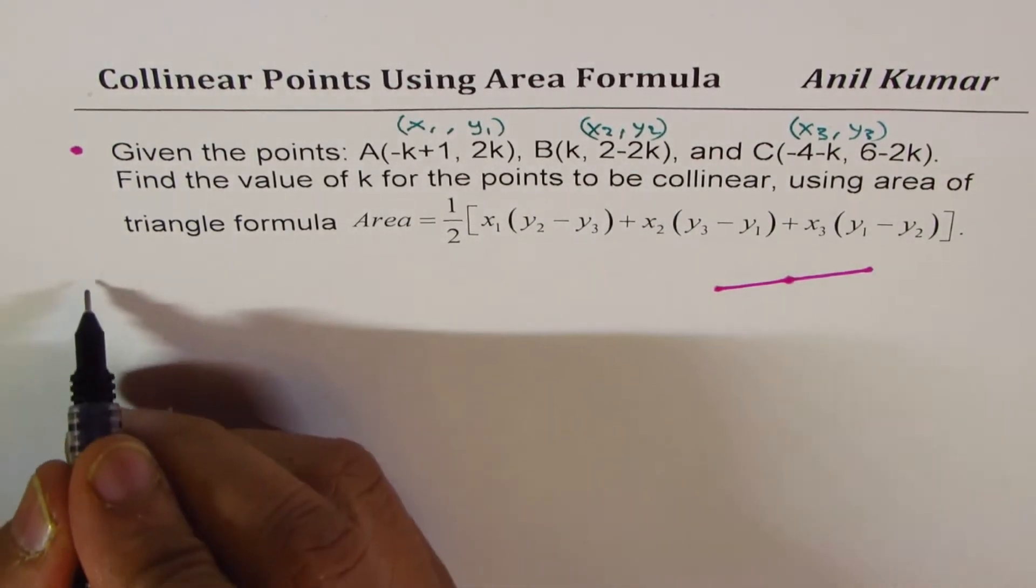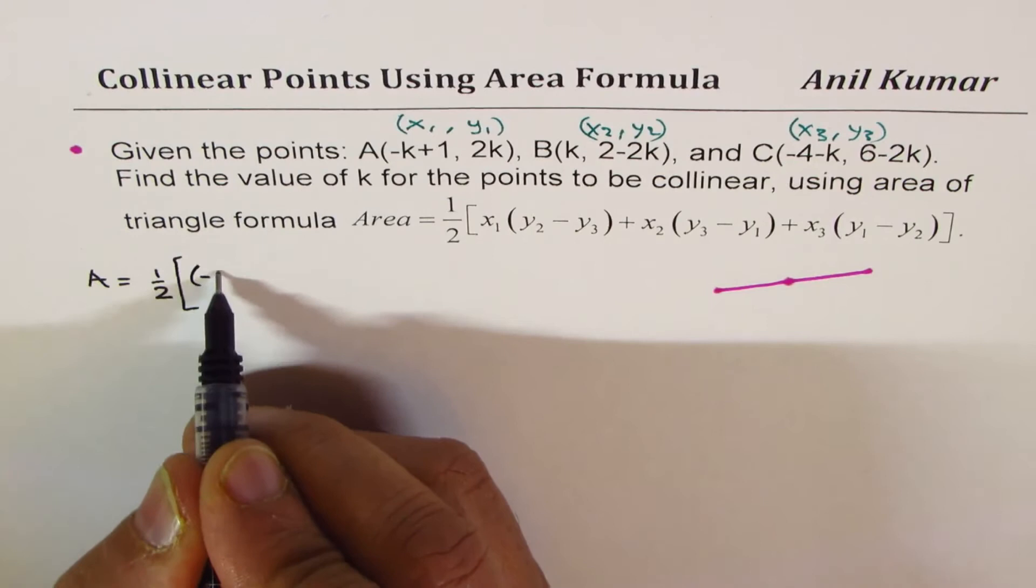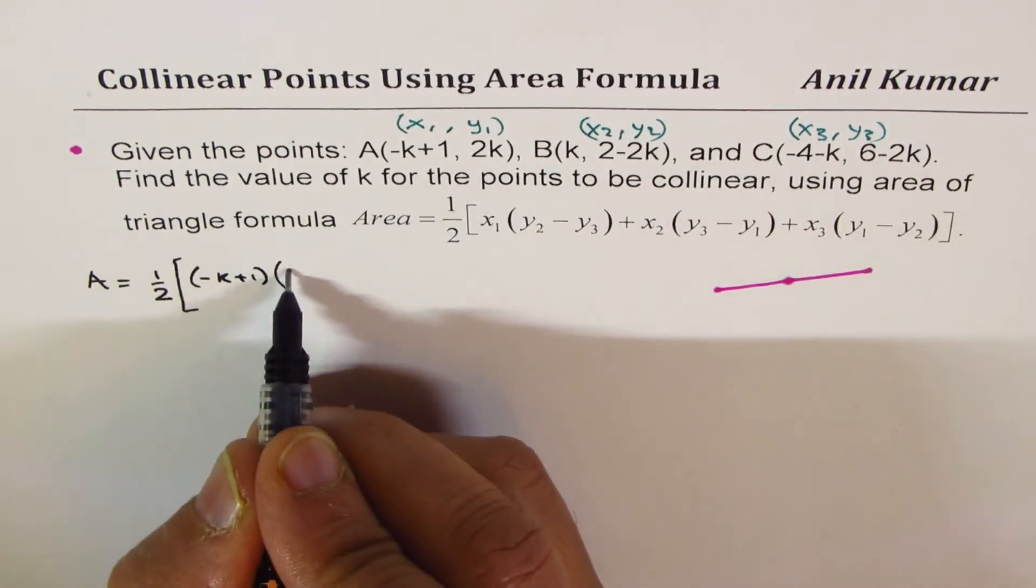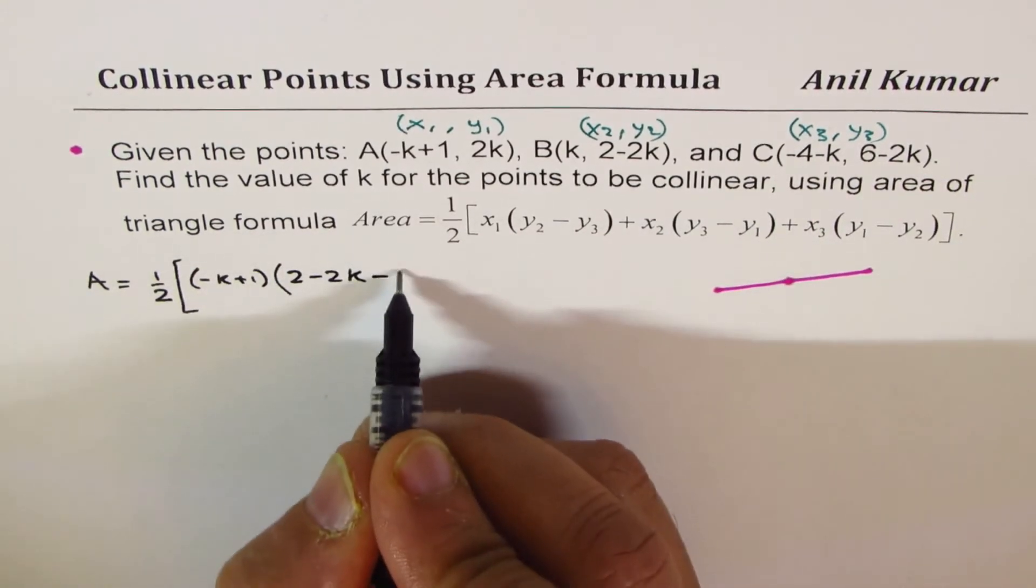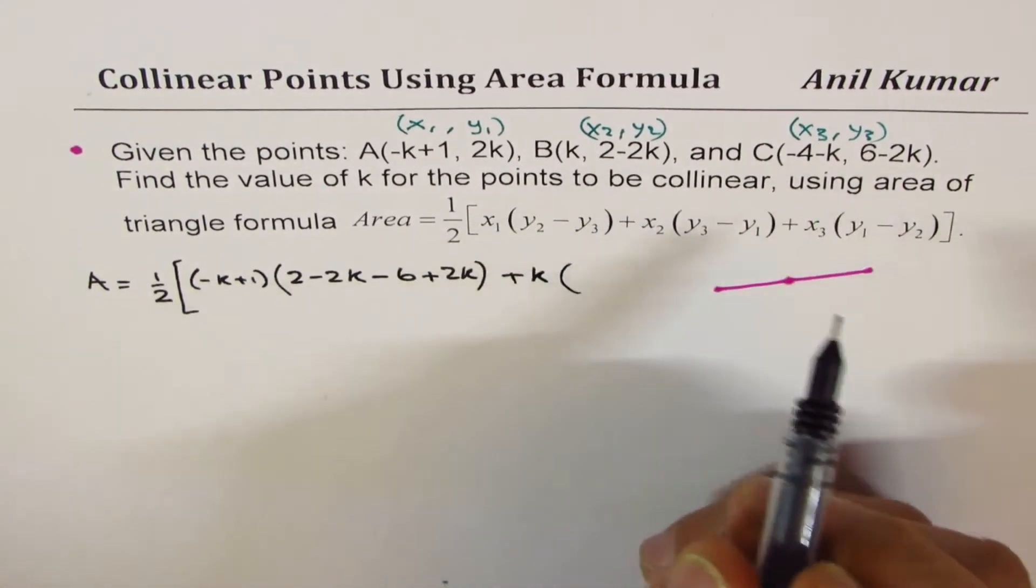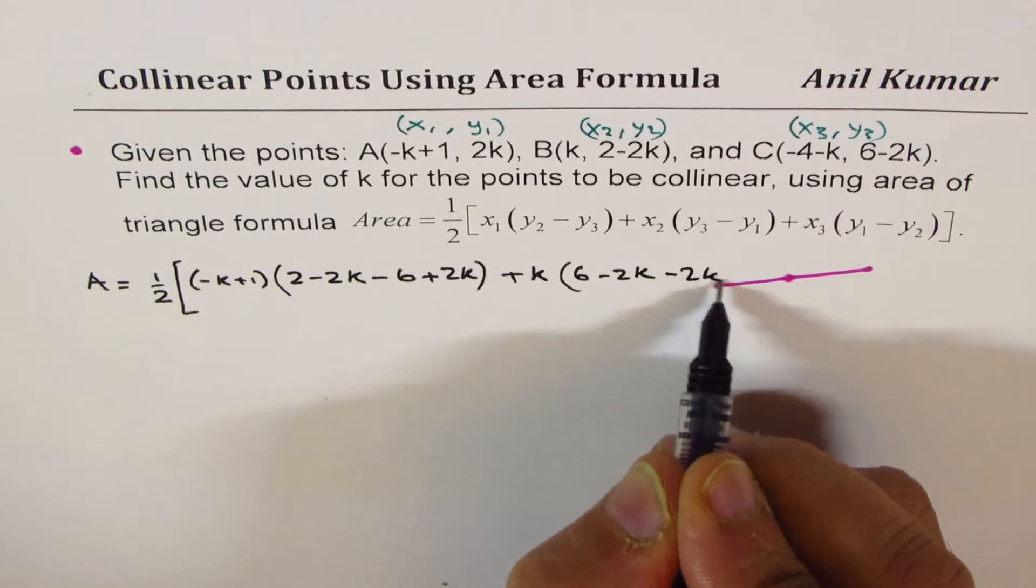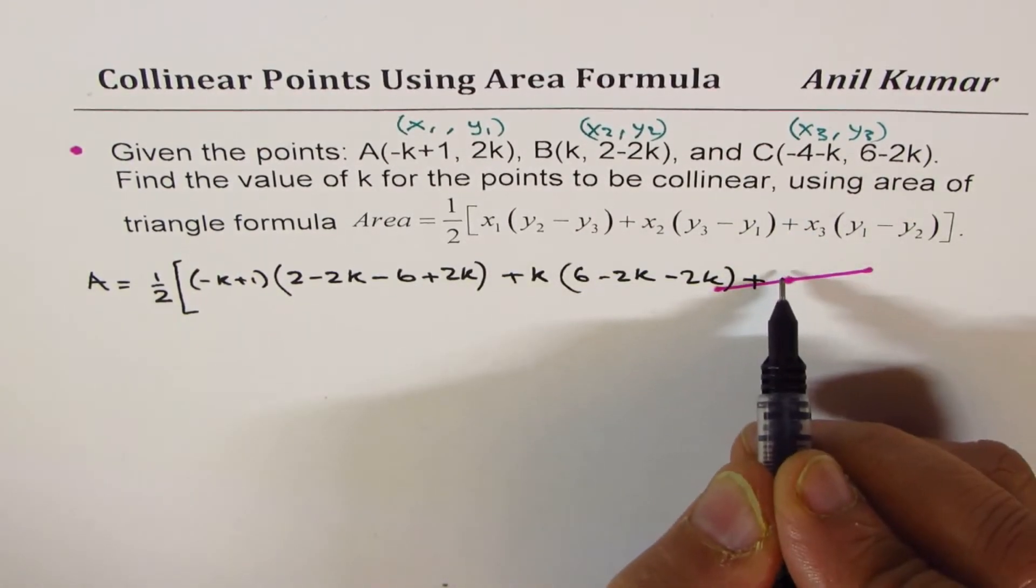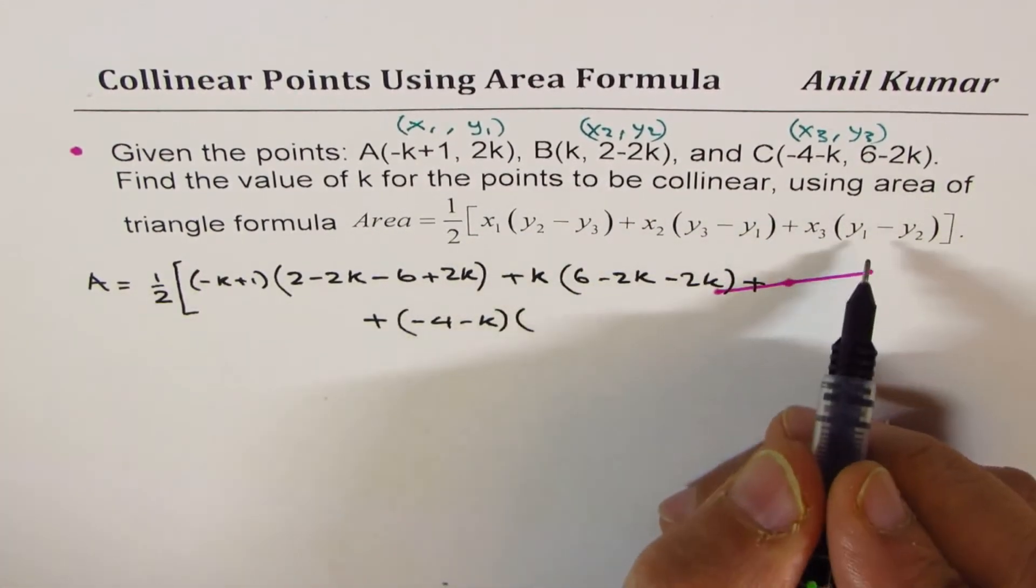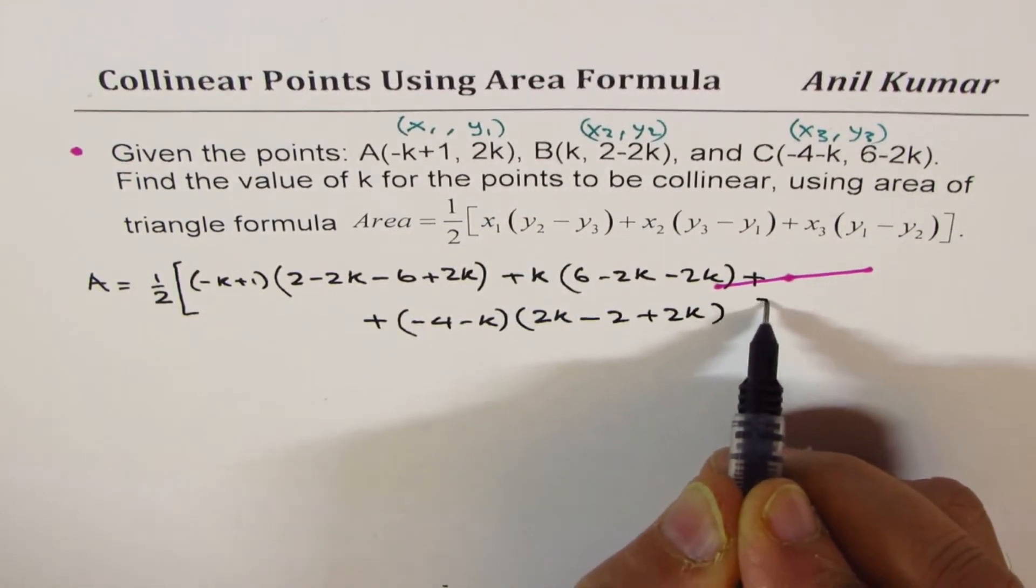So we can write area as equal to half of x1 is (-k+1) times y2 minus y3 which is (2-2k). This is y2, y2 will do minus 6 plus 2k. I'm changing the signs as I'm writing. x2 is k times y3 minus y1, that is 6-2k-2k, plus x3 which is, let me write here, plus (-4-k) times y1 minus y2, that is 2k minus 2k plus 2k.